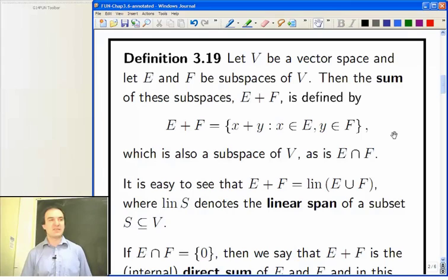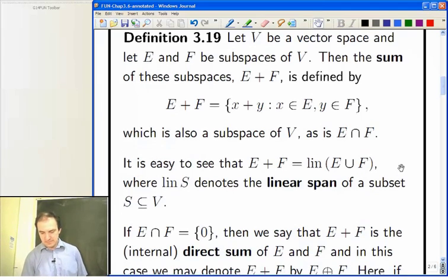It's easy to check that this is a linear subspace and that it's the smallest possible linear subspace you can have that's got both E and F in it. The result of which you can call it the linear span of the union E union F.